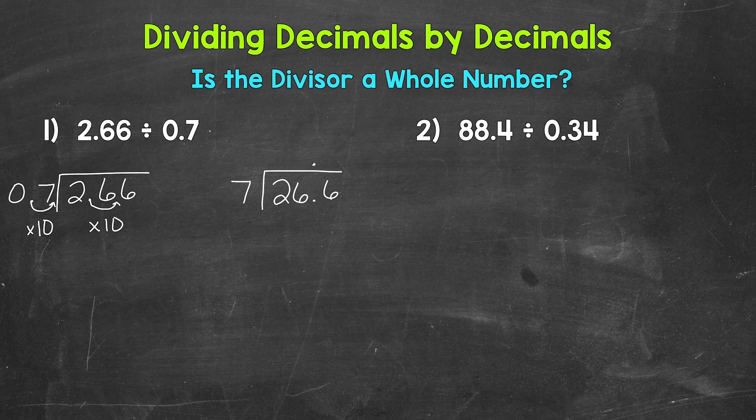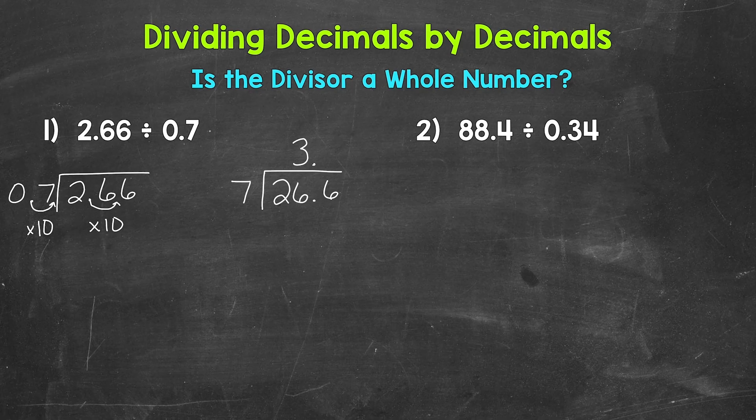So: divide, multiply, subtract, bring down, repeat. Let's start with divide. We have 2 divided by 7 — how many whole groups of 7 in 2? Well, we can't do that, so we need to use the 6 and take a look at 26. We have 26 divided by 7 — how many whole groups of 7 in 26? Well, 3 — that gets us to 21. Let's put the 3 above the 6 in 26, not above the 2, since we did 26 divided by 7.